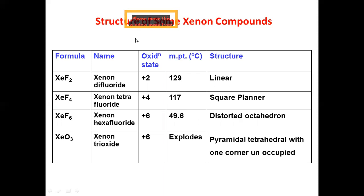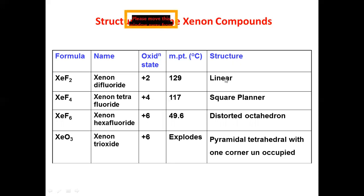Now the structures of xenon compounds. First, xenon difluoride (XeF₂): oxidation state is plus two, melting point is 129°C, and structure is linear. Xenon tetrafluoride (XeF₄): oxidation state is plus four, melting point is 117°C, and structure is square planar.